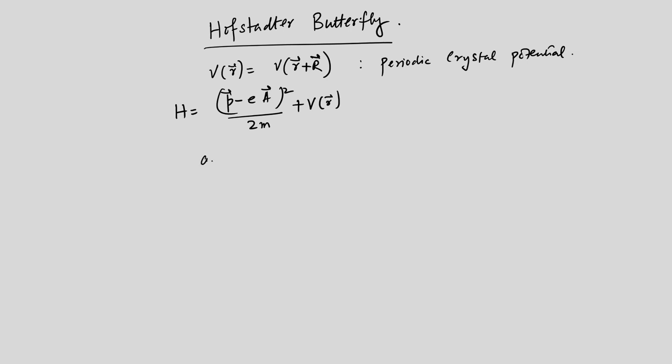This is a very important statement. The two length scales are a and L_B, where a is the lattice constant and L_B is the magnetic length. The Hofstadter butterfly arises when the ratio of a and L_B is a rational fraction. More interesting physics arises when the ratio is irrational, but we will not discuss that here. This fractal nature of the spectrum was first discovered by D. Hofstadter in 1980, which is why it is called the Hofstadter butterfly.